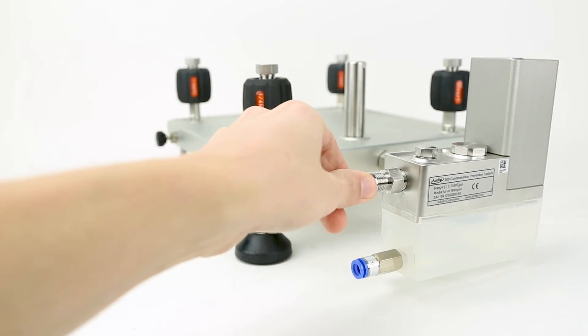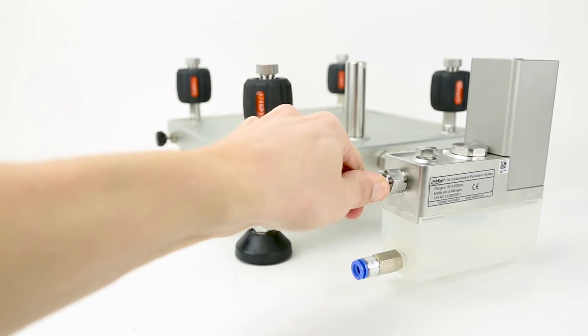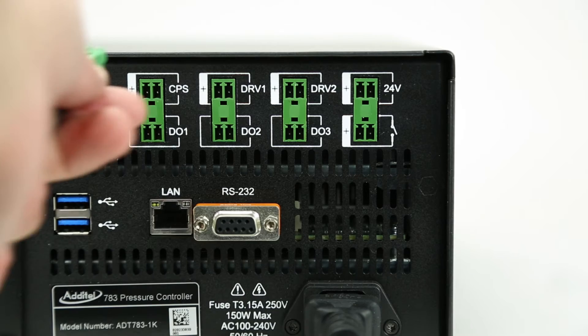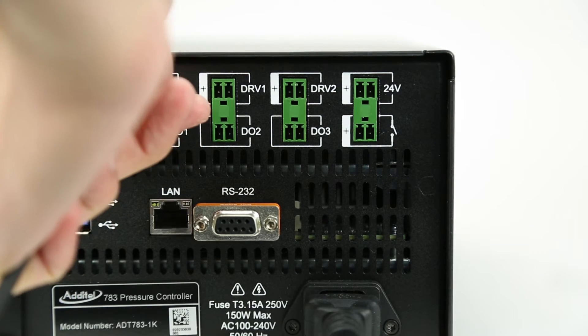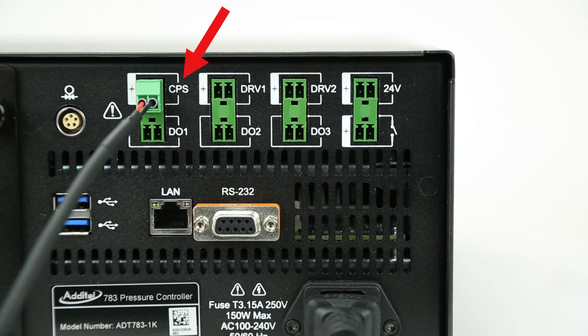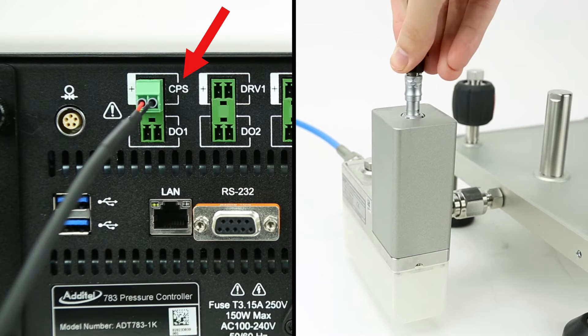Next, connect the pressure hose from the controller to the back of the CPS. Finally, connect the included communication cable from the CPS port on the back of the controller to the port on the top of the CPS itself.